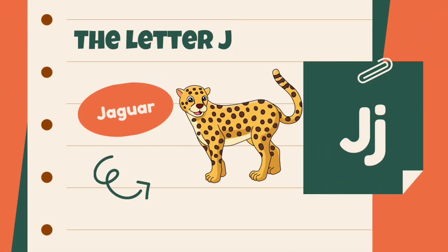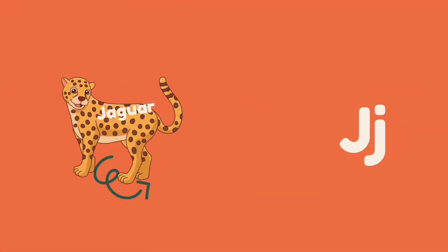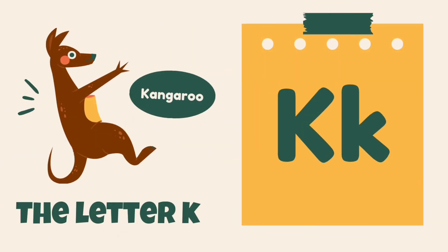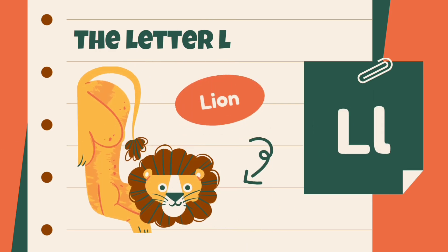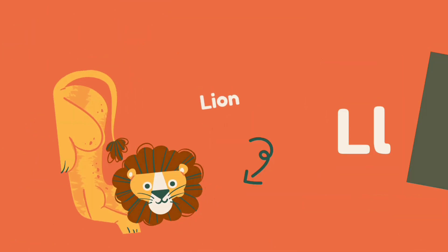J is for jaguar, jaguar. K is for kangaroo, kangaroo. L is for lion, lion.